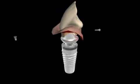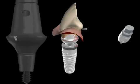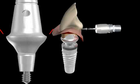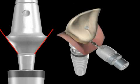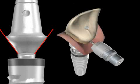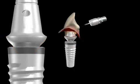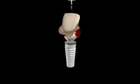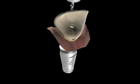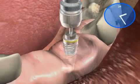Implant producers implemented conical connections between implant and abutment early on, which created a small difference with significant consequences.